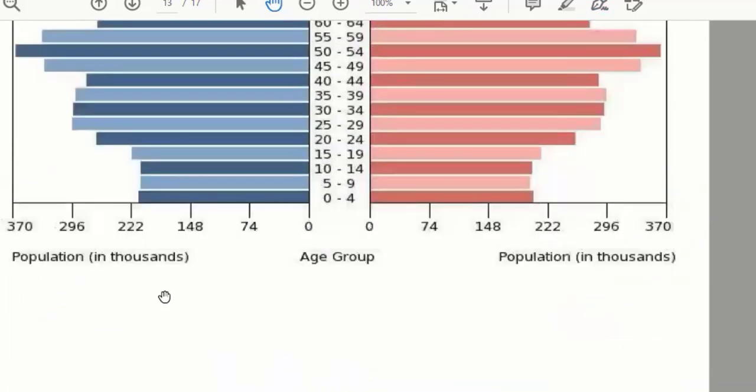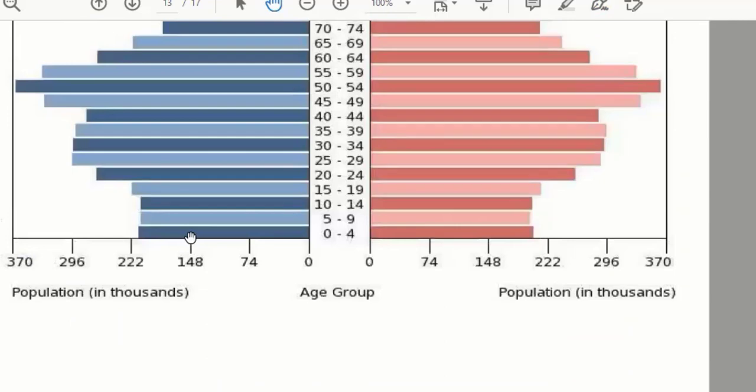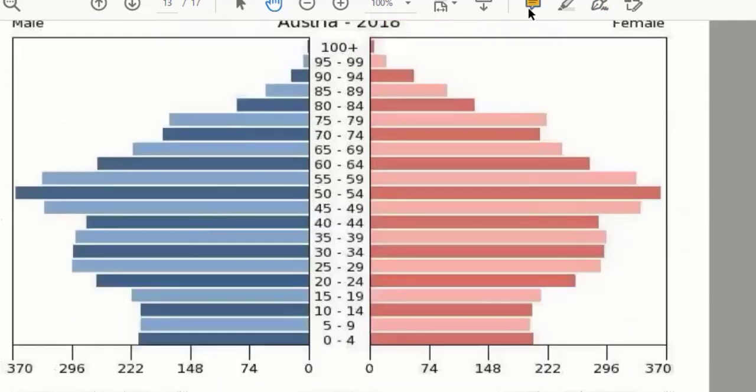In Australia it is like this. So when you will find that the pyramid is becoming like a rectangle, almost not like a pyramid like this or like this, it means it is talking about stationary.